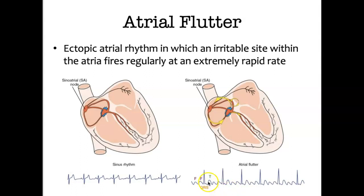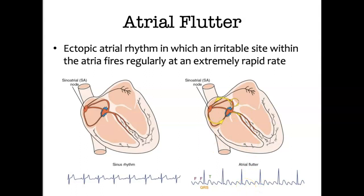In this strip, there are three flutter waves to one QRS, so this is called three to one. You may have two to one or four to one. This atrial block may also be variable — you can go from three to one, two to one, four to one. It's very erratic.